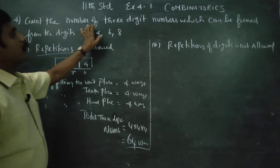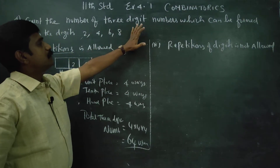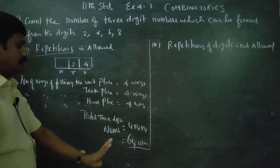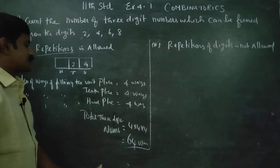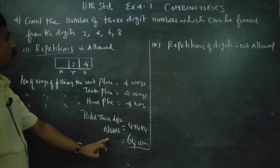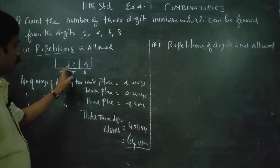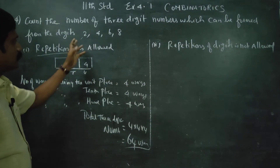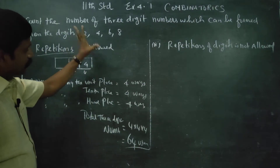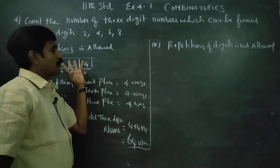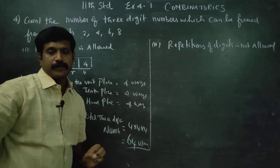So how many 3-digit numbers can be formed? The number of 3-digit numbers with repetition allowed is 64 numbers.